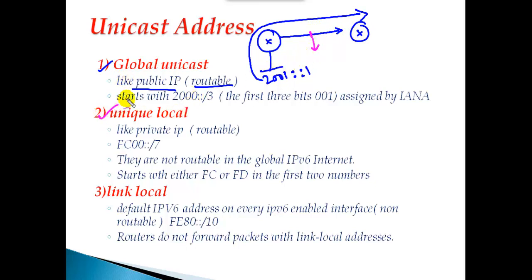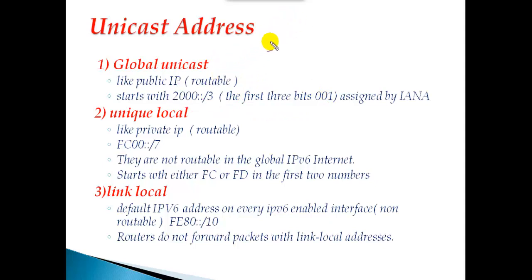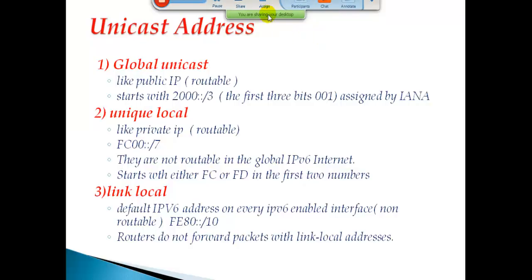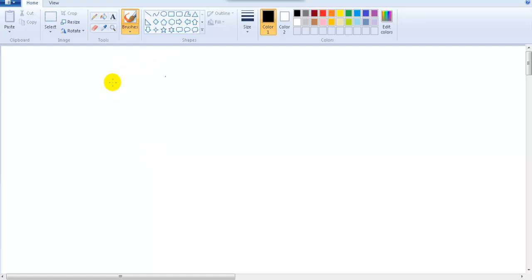To identify whether an address is a global unicast or unique local address: any address that starts with 2000::/3 is a global unicast address. The /3 means the first three bits are always constant — 001 — as assigned by IANA. So any address whose first three bits are 001 falls into the global unicast range.